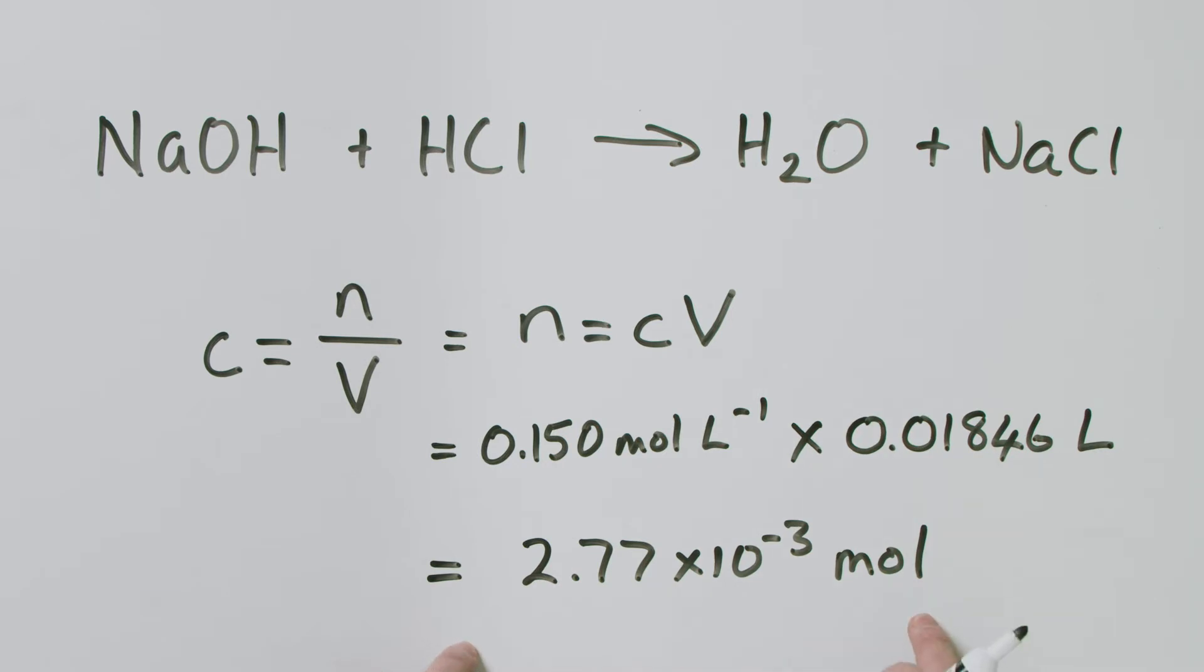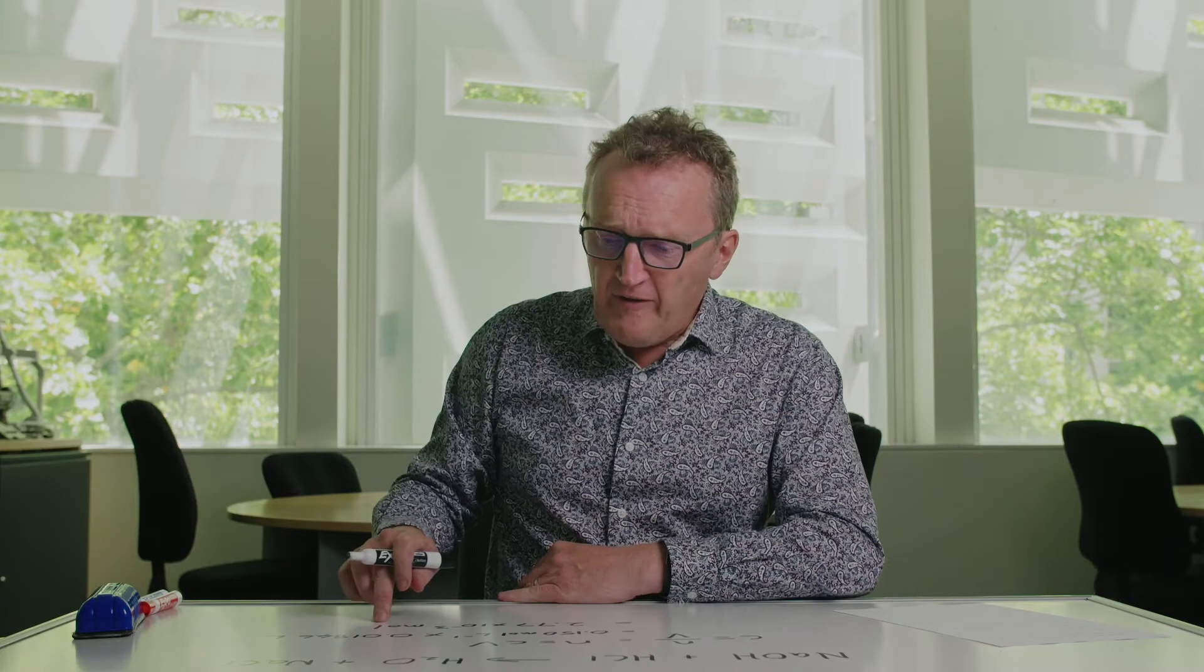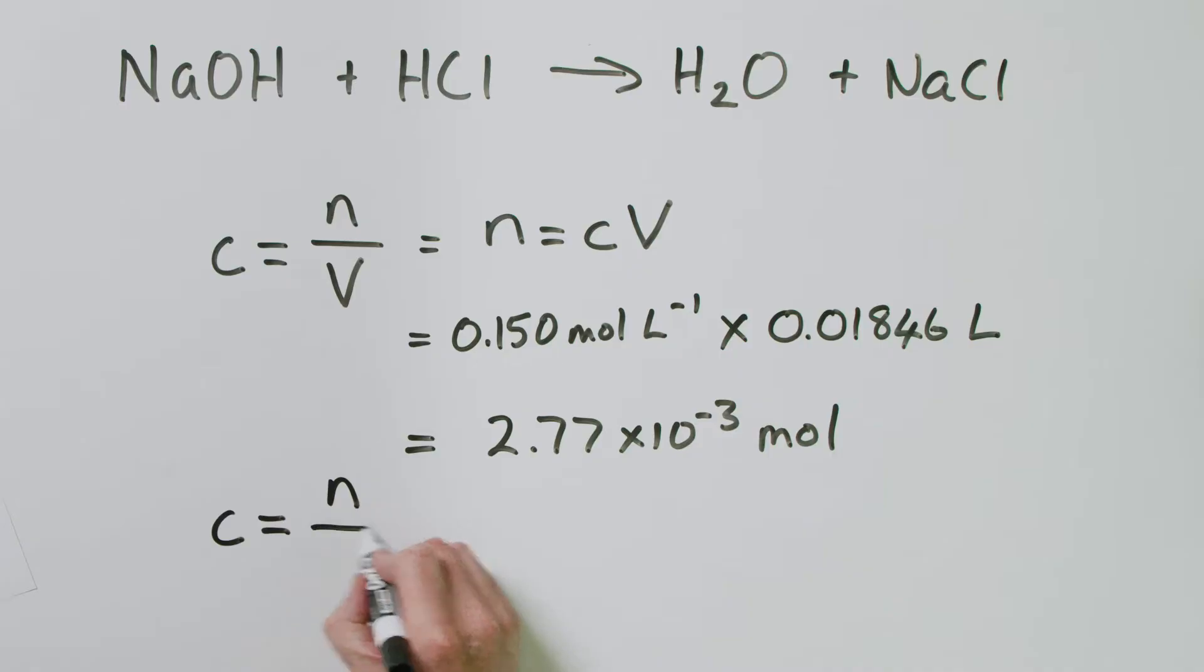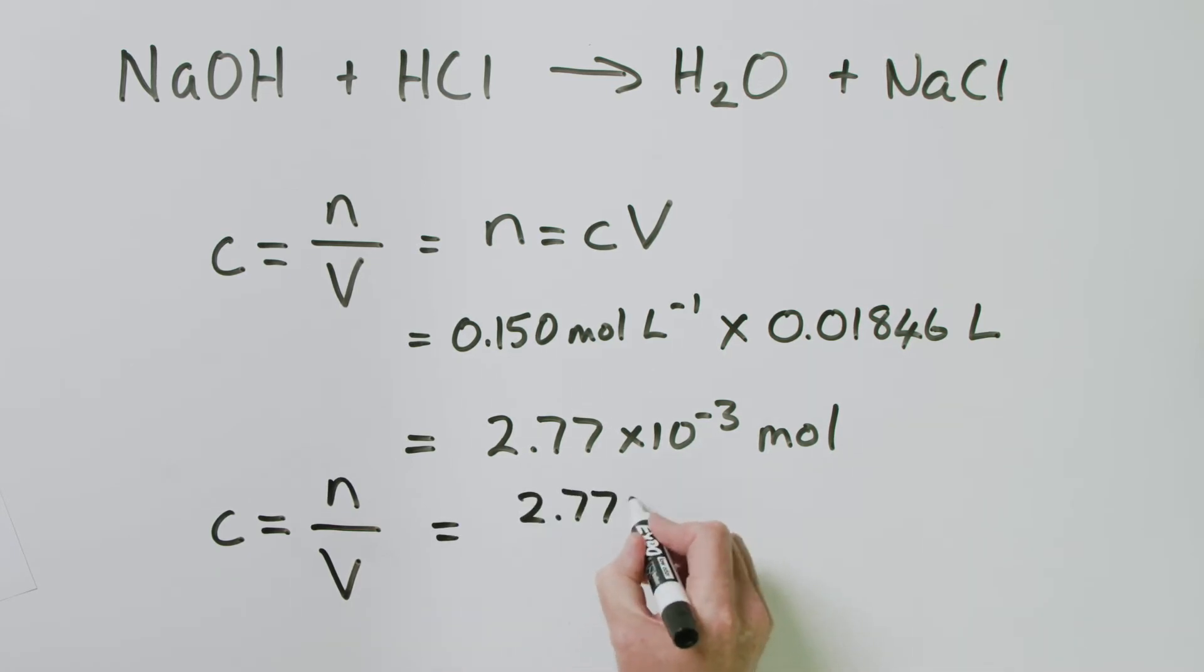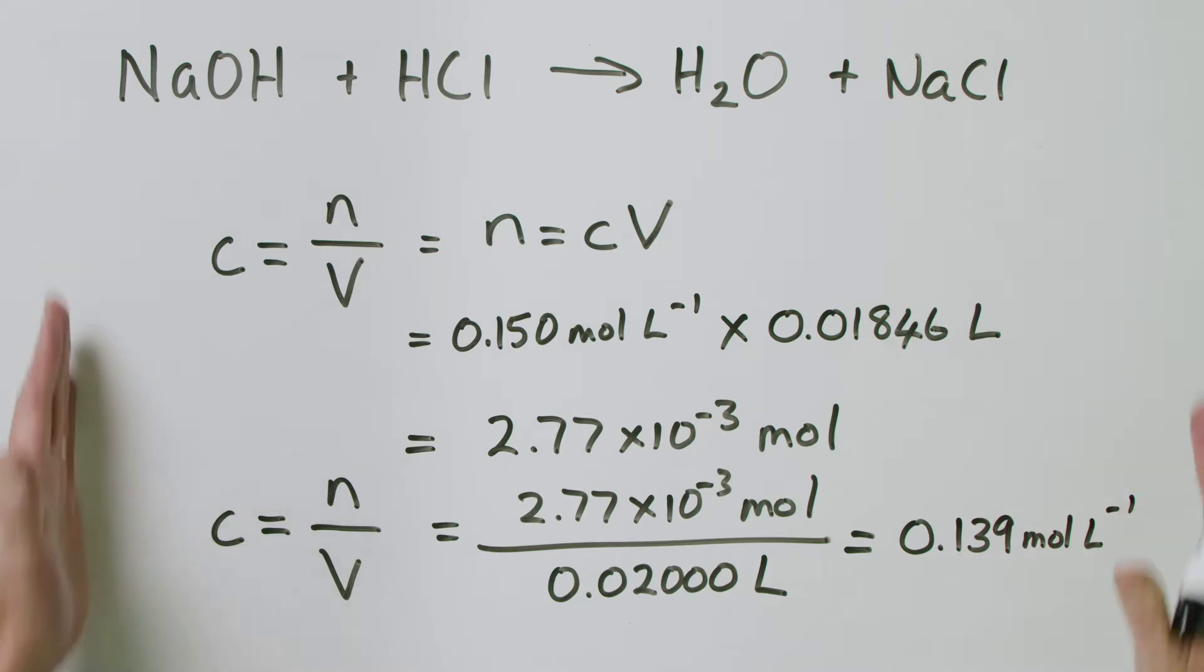So, having done that first bit, we've got our number of moles of sodium hydroxide. And we know that that is going to be the same number of moles of HCl. But that now is going to be the number of moles of HCl that we've got in 20 mLs. Remember, our HCl solution had a volume of 20 mLs. So, having done this, we can then get our concentration of our HCl. C is equal to N over V. Here is your number of moles, 2.77 times 10 to the minus 3 mole. Here is your volume. It's 20.00 mLs, which, in terms of litres, 0.0200 litres. We do that calculation, and we end up with a concentration of 0.139 mole per litre.